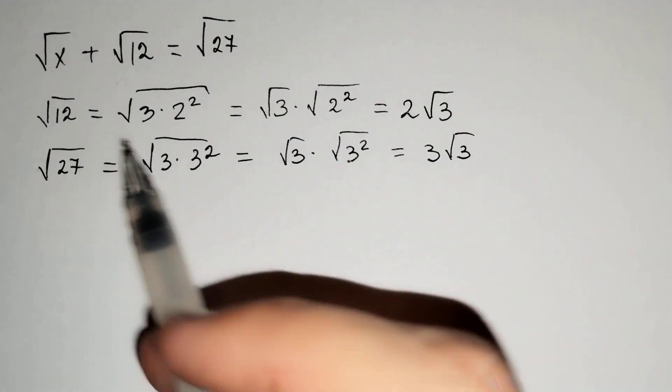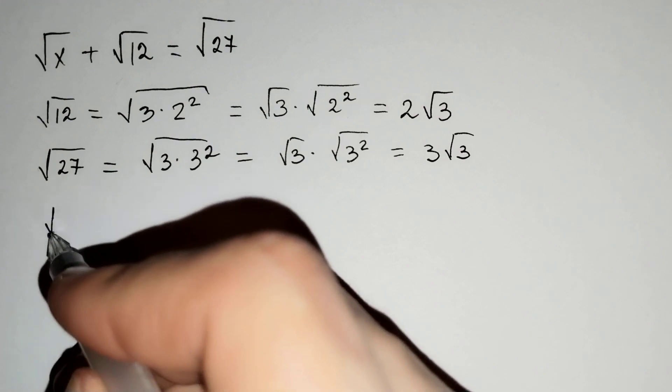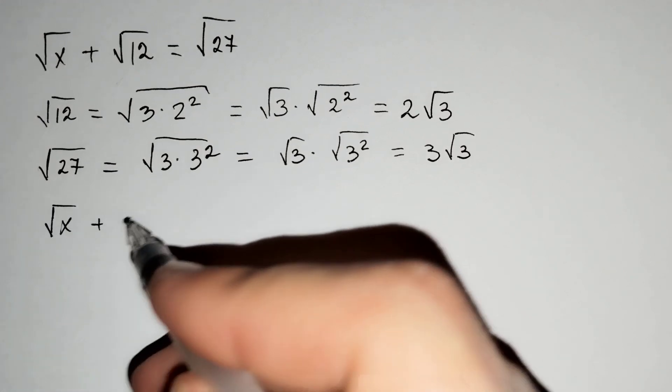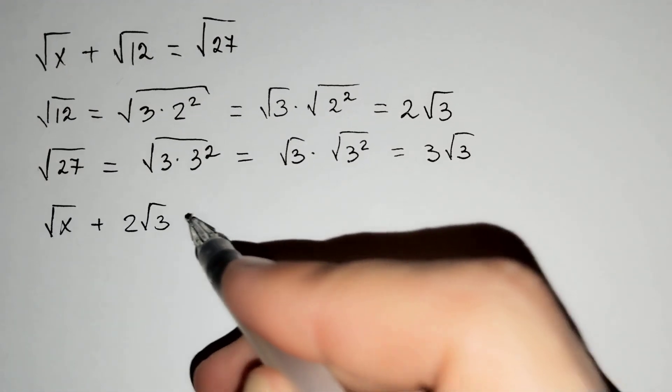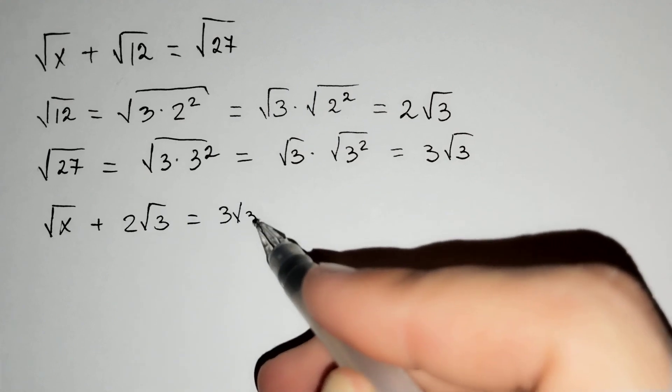Then, let's put this above. The square root of x plus 2 square root of 3 equals 3 square root of 3.